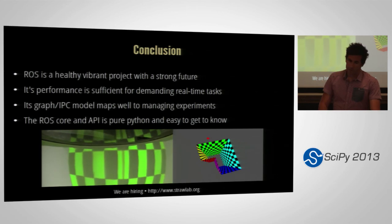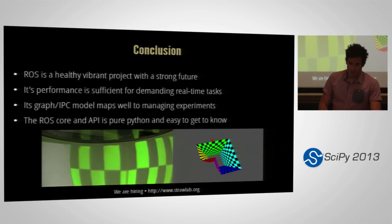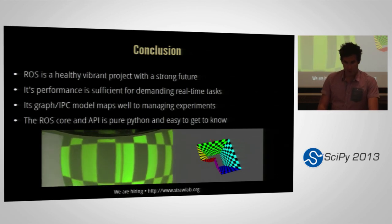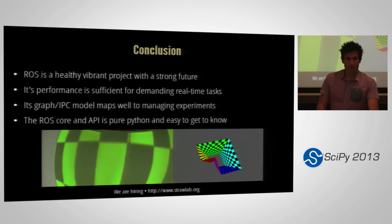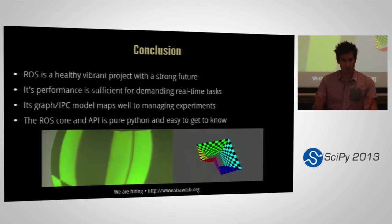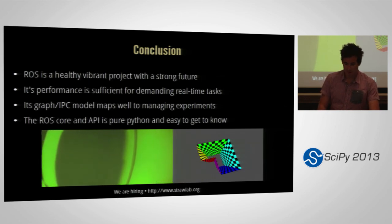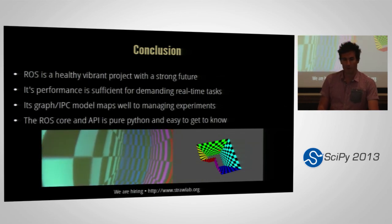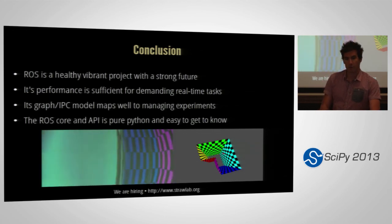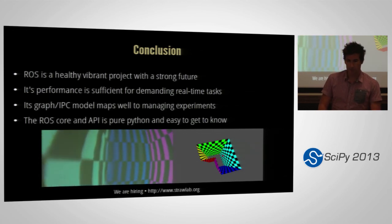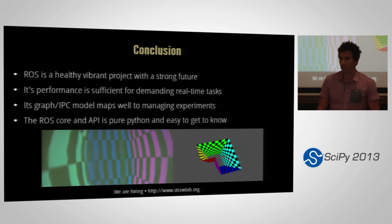Finally, I'd like to conclude with the fact that ROS is a very healthy and vibrant project with a very strong future, even if it has some questionable engineering decisions. And its graph and IPC model maps very well to distributing reliable scientific applications. And finally, we're looking for a bio-neuroinformatician or scientific Python hacker guru. So if you want to move to Vienna, come talk to me. And quickly, maybe time for one question.